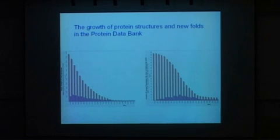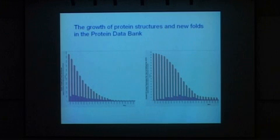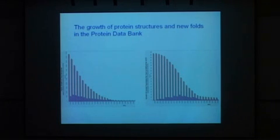If we compare the left figure with the right figure, this figure shows the increase of the number of new folds in the SCOP protein classification database. If we compare these two figures, the increase of new folds is currently very slow, and this curve almost reaches a plateau. So the question is: have we discovered all the possible protein structures?